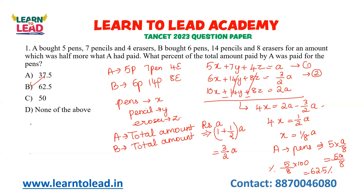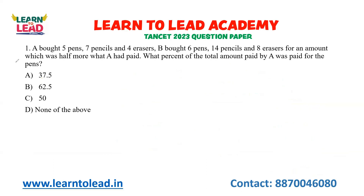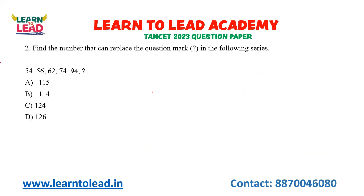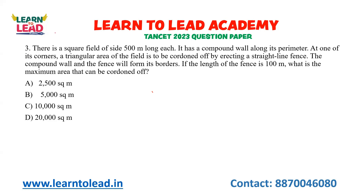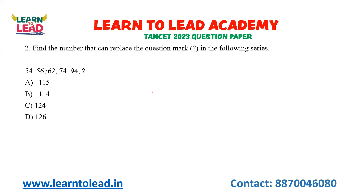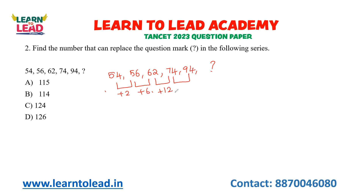Now let us see the next question. This is a question based on number series: 54, 56, 62, 74, 94. What is the next number? The differences between consecutive terms are: +2, +6, +12, +20. If you look at these differences, there is no direct correlation at first glance.